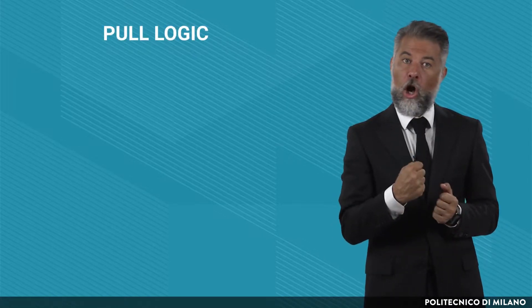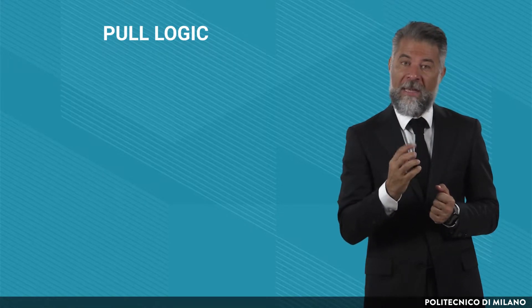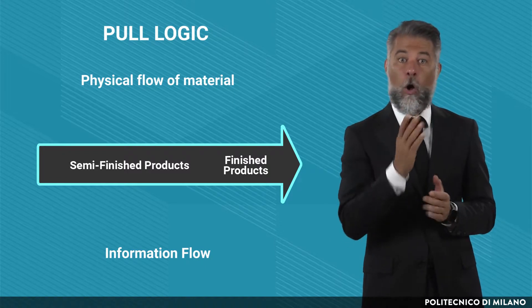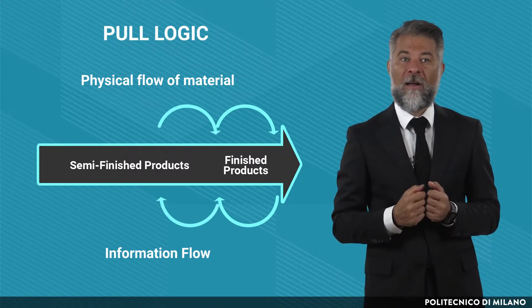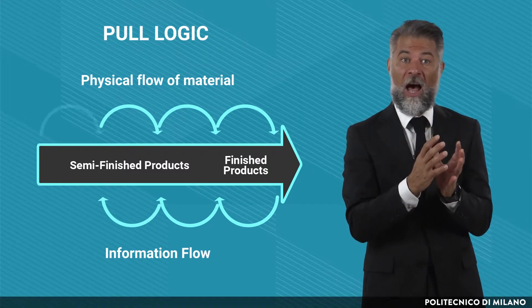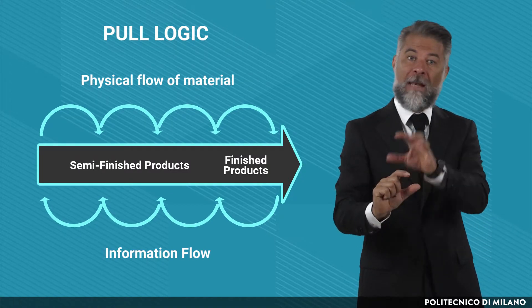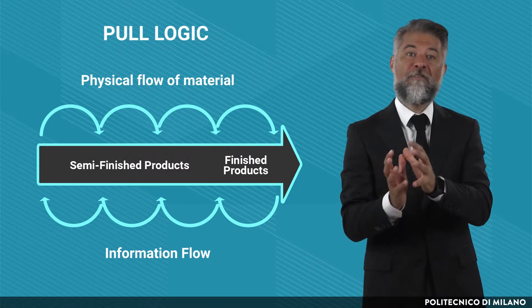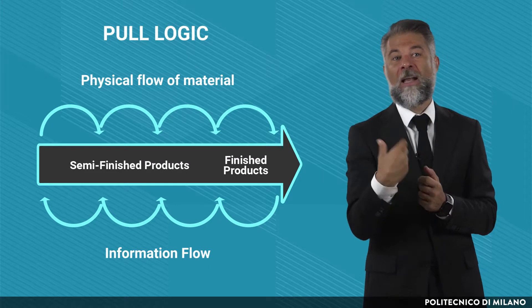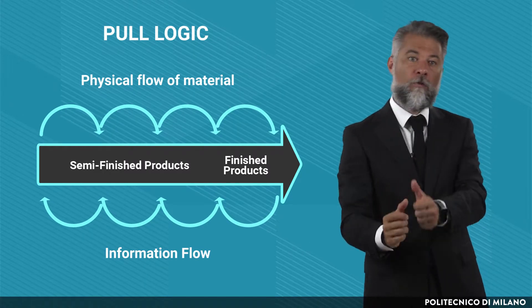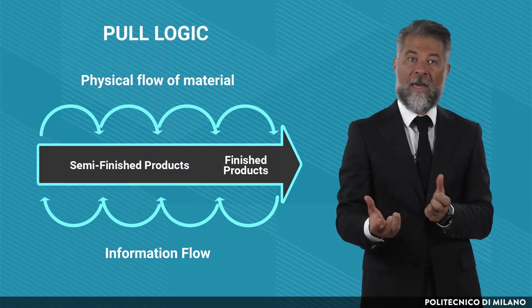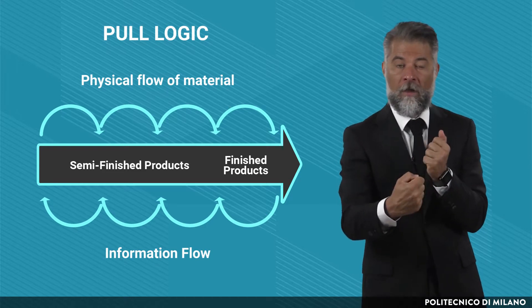Reorganizing what we have been describing so far, it is possible to explain the origin of the two names: pull and push. Pull logic ensures the availability of materials needed to complete the MPS by moving upstream one step at a time the information regarding the downstream requirements. Replenishment orders at every stage are issued when the local stock gets too low, containing information which moves upstream only when there is a consumption at a downstream stage. The consumption causes a reduction in stock, and a lower stock triggers a replenishment. For this reason, we can say that upstream replenishments are pulled by downstream consumption.